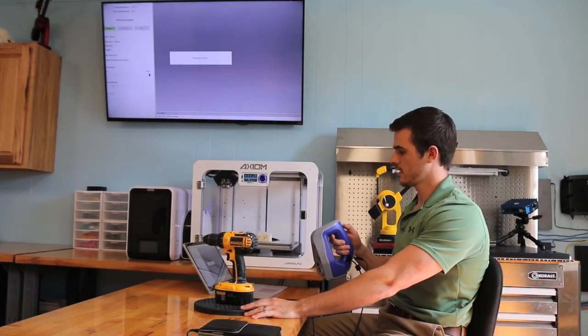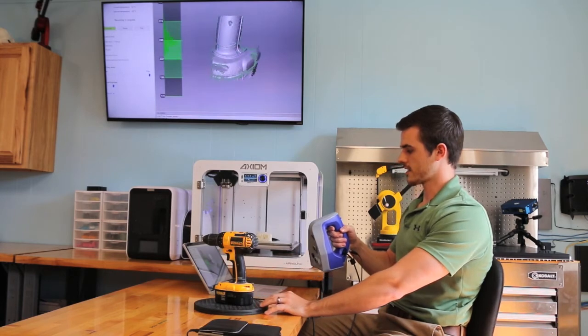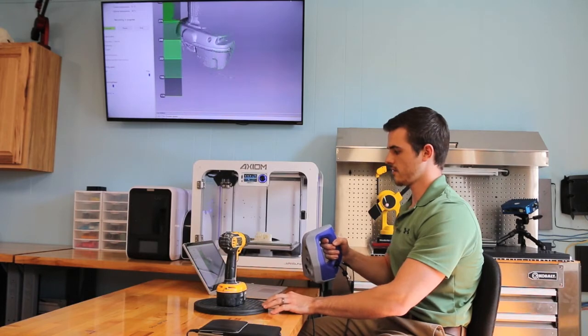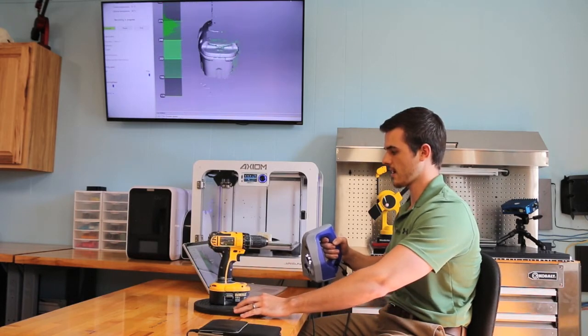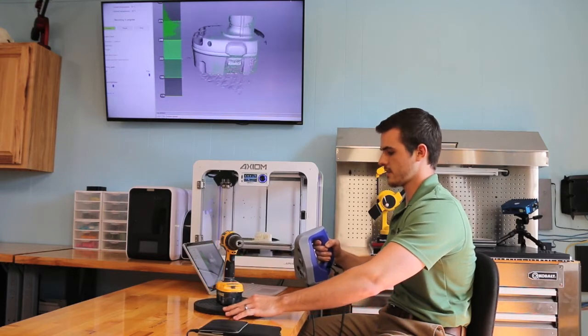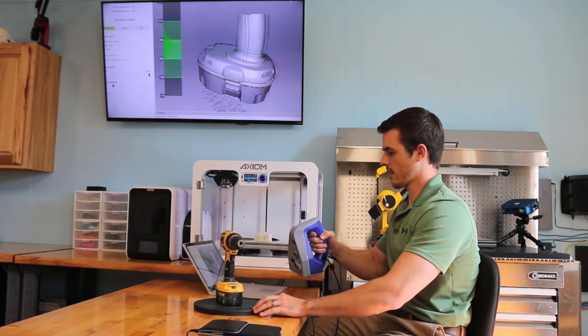So first we will press scanning, make our way around the part. Notice we have not used any tracking dots or have treated our part with any material, and we're simply using the geometry and the texture for our tracking.